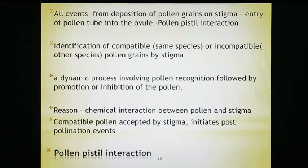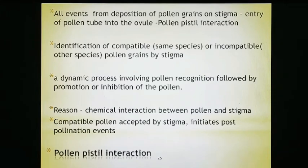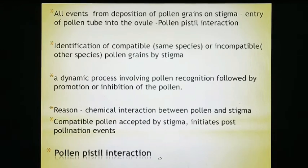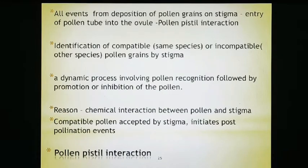In the case of incompatible pollen, there is no tendency to germinate the pollen tube, because those pollen grains do not belong to that particular species. So the first thing is identification of compatible species. Moving on to the second point: it is a dynamic process involving pollen recognition, followed by promotion and inhibition of pollen. It is a very dynamic and random process involving pollen recognition, which will be followed by promotion and inhibition of pollen.